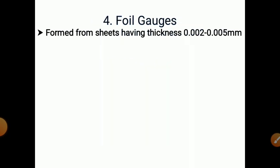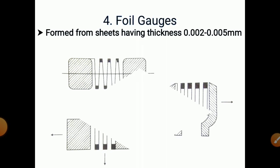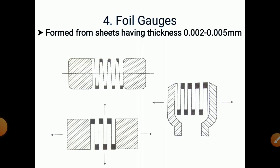Next is foil gauges. These are formed from sheets having thickness 0.00 to 0.005 mm — very thin sheets. Such gauges are called foil gauges.